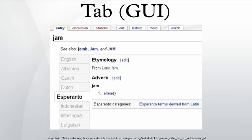In interface design, a tab document interface or tab is a graphical control element that allows multiple documents or panels to be contained within a single window, using tabs as a navigational widget for switching between sets of documents. It is an interface style most commonly associated with web browsers, web applications, text editors, and preference panes.